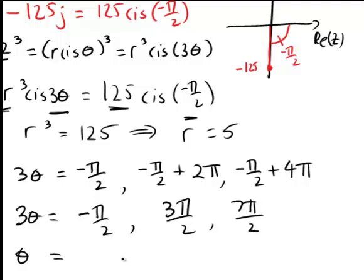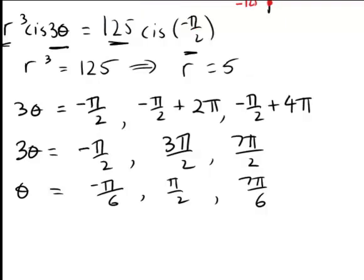Dividing each of those by 3, θ is therefore -π/6, π/2, and 7π/6.